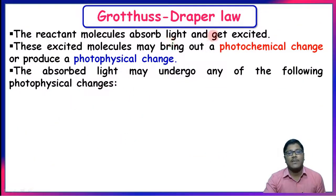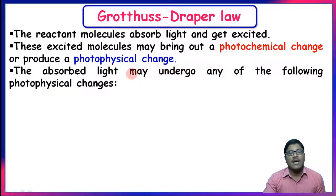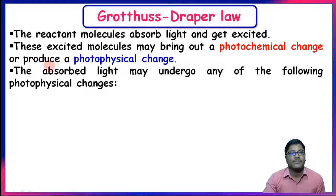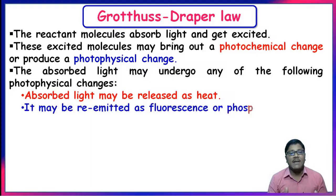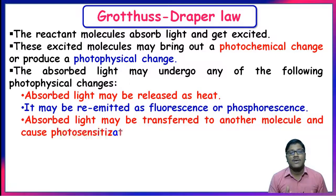The reactant molecules absorb light and get excited, and these excited molecules may bring out a photochemical change — but not always 100%. Sometimes the absorbed light may produce a photophysical change: it may be released as heat, re-emitted as fluorescence or phosphorescence, or transferred to nearby molecules causing photosensitization.